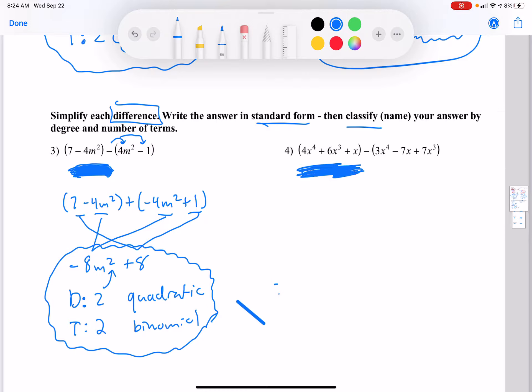So let's do the next one. Again, we're going to take this negative, turn it to positive, turn that frown upside down. So 4x to the 4th power plus 6x cubed plus x plus negative 3x to the 4th plus 7x minus 7x cubed.